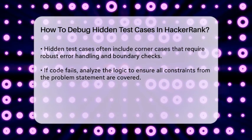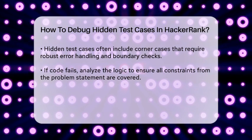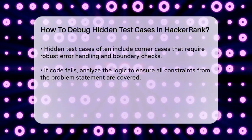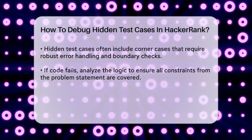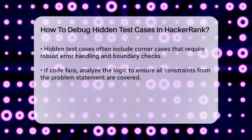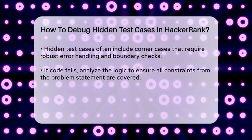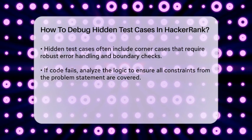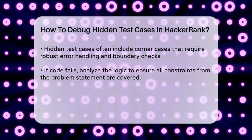If you're still stuck, consider the logic of your code. Hidden test cases are there to ensure your solution is robust and handles all possible scenarios. Make sure your code checks for boundary values, handles errors properly, and covers all the constraints mentioned in the problem statement.